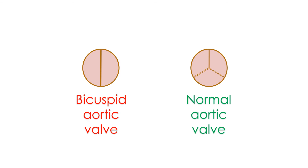The aortic valve at the origin of the aorta normally has three semilunar cusps. If it has only two cusps by birth, it is known as bicuspid aortic valve. Such valves can get narrowed later, and then it is known as aortic stenosis.